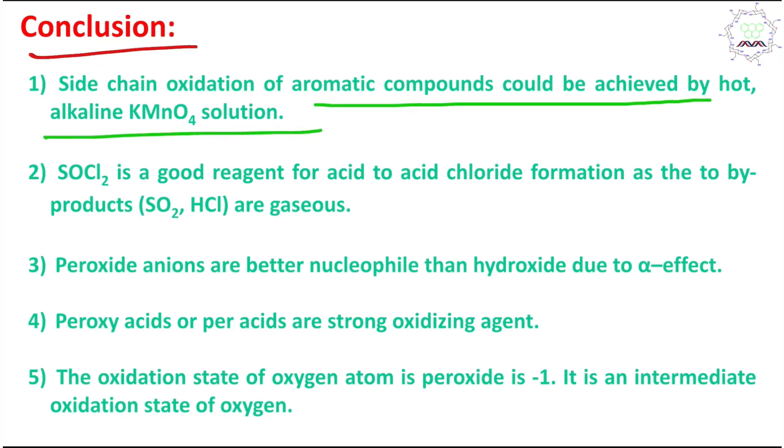Thionyl chloride is a good reagent for acid to acid chloride formation as the byproducts, both SO2 and HCl, are gaseous in nature so they come out from the reaction medium efficiently. Peroxide anion is a better nucleophile than hydroxide due to alpha effect.